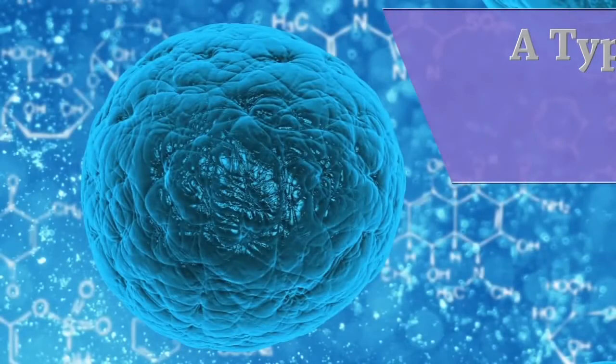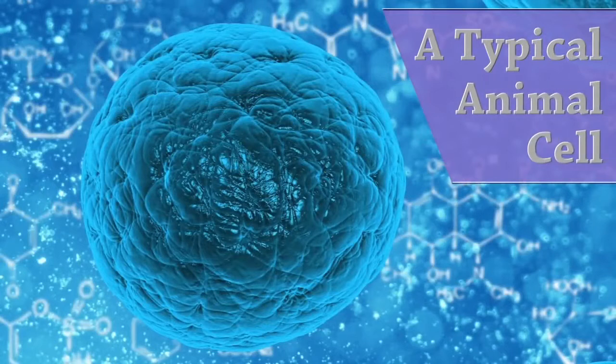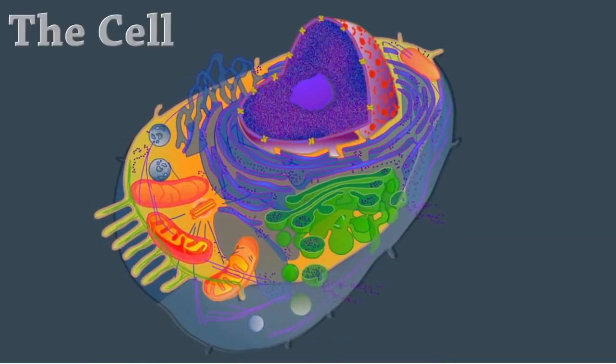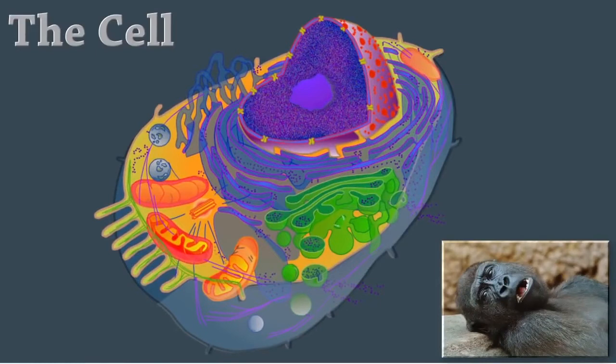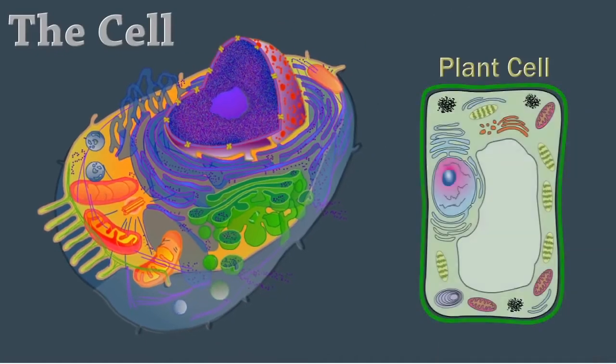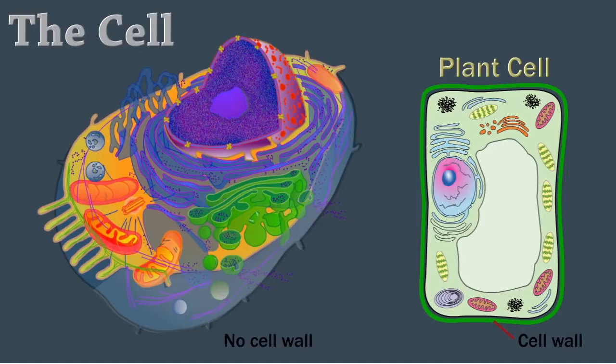Welcome to A Typical Animal Cell. In this video, you'll explore parts of an animal cell and the function of organelles. The cell is the basis for all life. It's the fundamental building block for all known living organisms. Unlike plant cells, animal cells lack a cell wall, so they come in a variety of shapes and sizes.